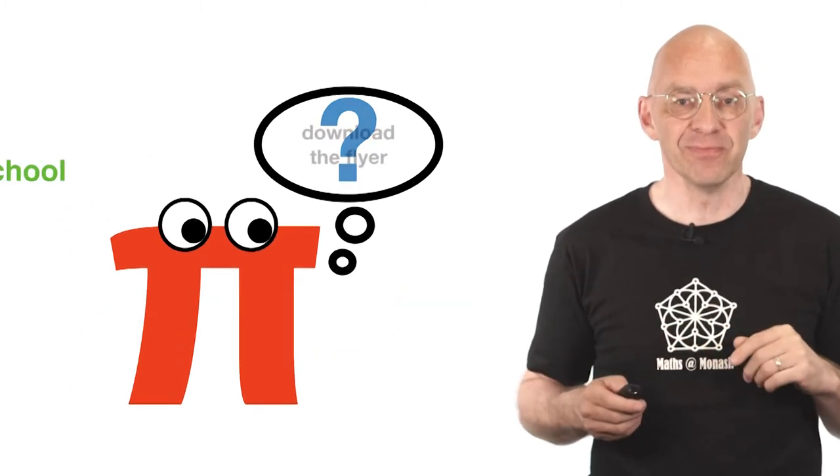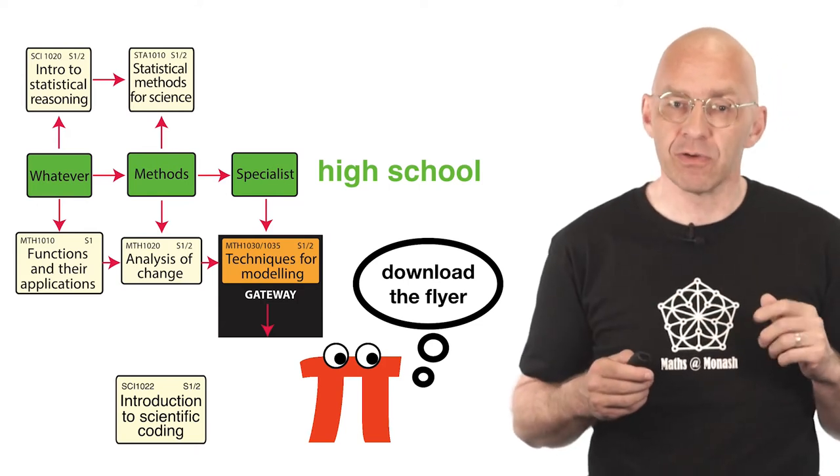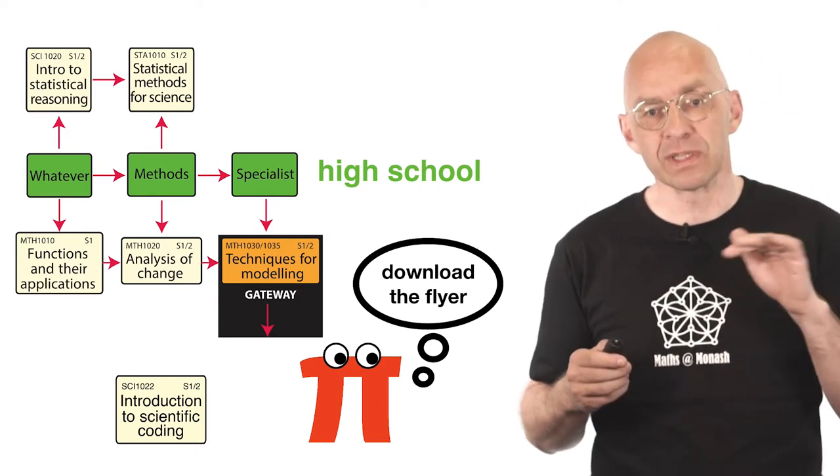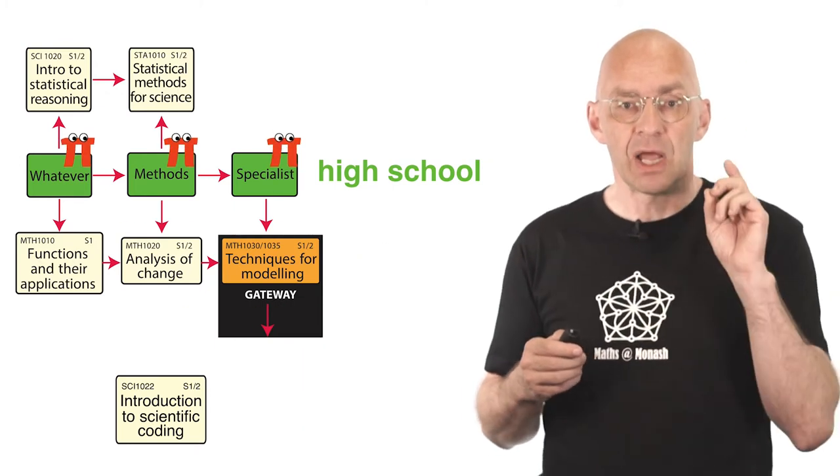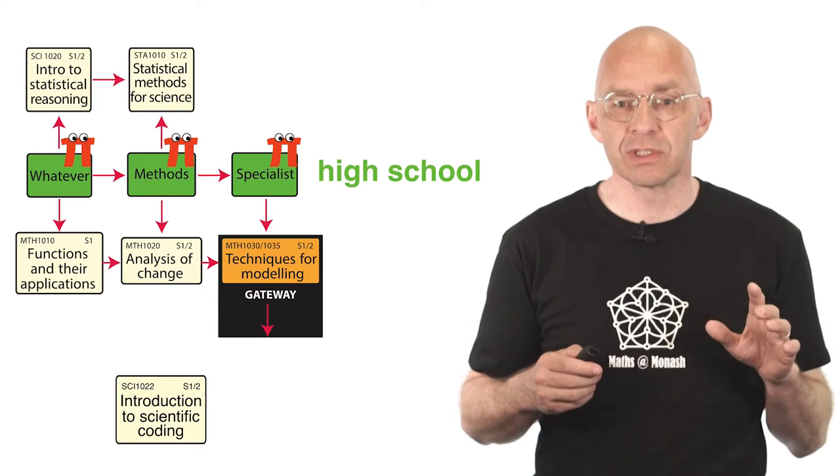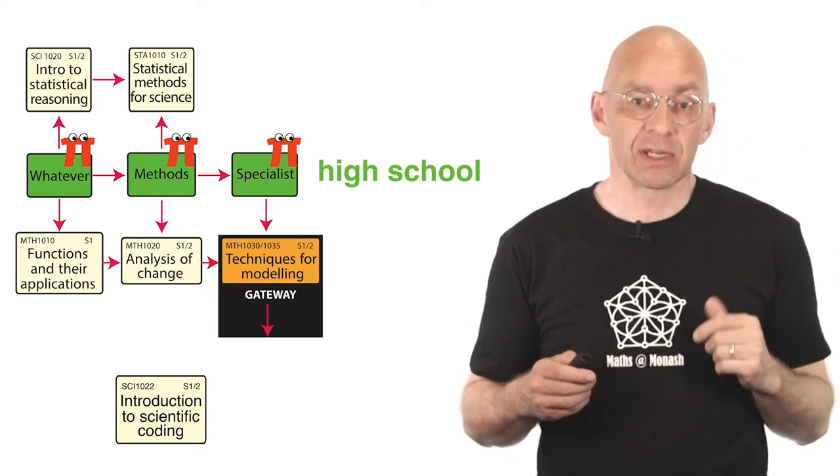For the rest of you, locate where you are on this map in terms of the level of Victorian math subjects or their equivalent. That's the green boxes. Okay now we have to figure out which of the units in the boxes at the top and at the bottom is the best starting point for you.